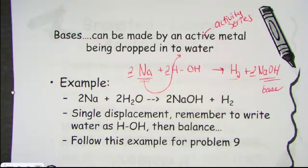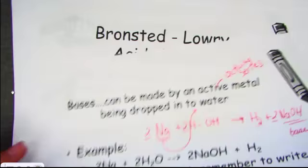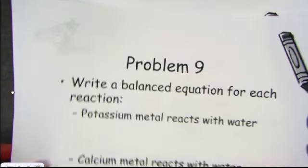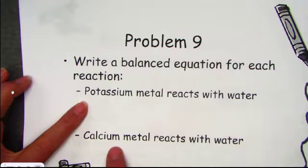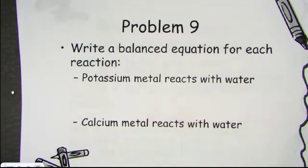But now we're reminding ourselves that this actually produces a base — something that would change an indicator's color. Pause the video and try the practice problem: write a balanced equation for the reaction of potassium and then calcium with water. They are active metals, so no need to check the activity series. Try writing these out by pausing the video, and when ready to check, start it up again.